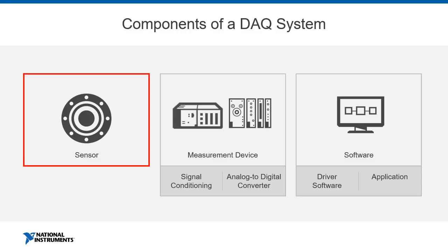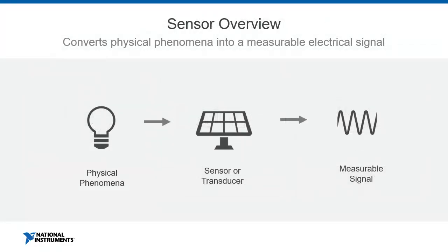Let's discuss sensors and the types of signals they generate. The purpose of a sensor is to convert a physical phenomenon — such as light, temperature, pressure, position, sound, etc. — into a measurable electrical signal such as a voltage or current. Here we have an example of a solar panel, which receives the physical phenomenon of light and converts it into a measurable voltage or current, depending on the application or sensor you might be using.